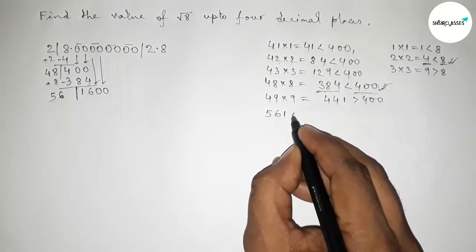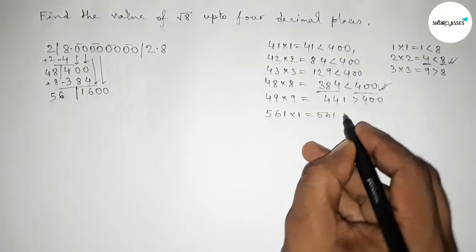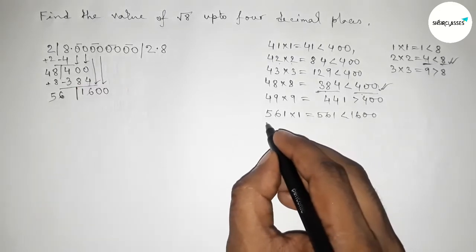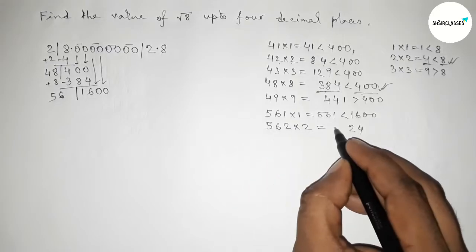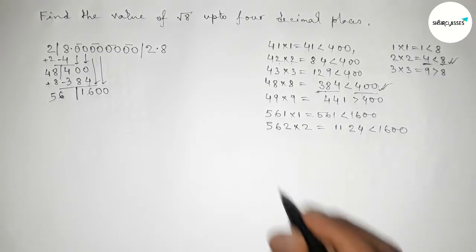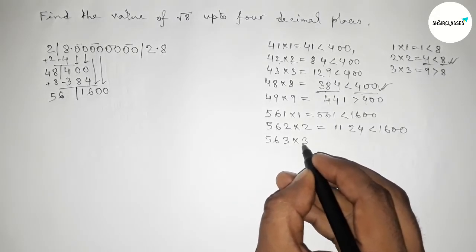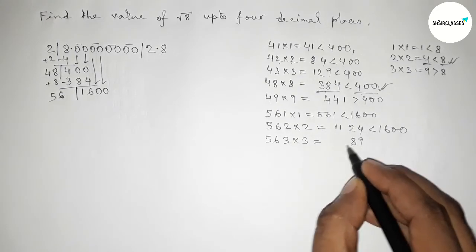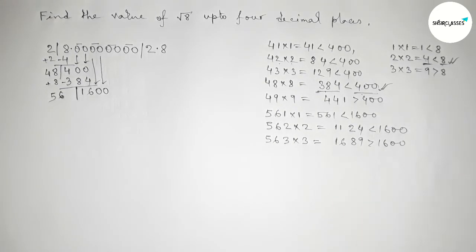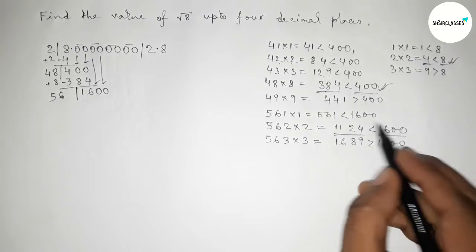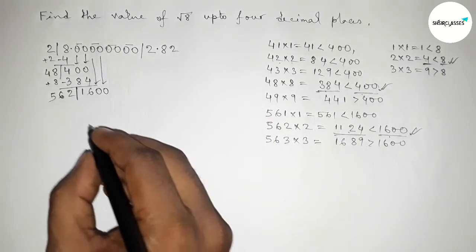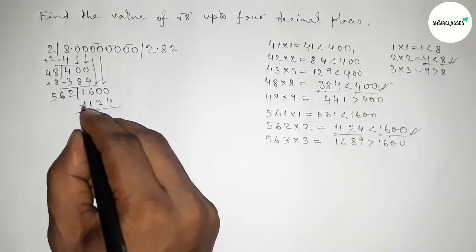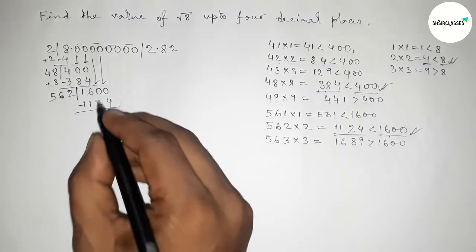Now choose a digit beside 56 and multiply by that digit, less than 1600 and almost near. Taking 1: 561 times 1 is less than 1600 but not close. Taking 2: 562 times 2 equals 1124, less than 1600 and almost near. Taking 3: 563 times 3 equals 1689, greater than 1600. So we choose 2. Write down 2 and the product is 1124.